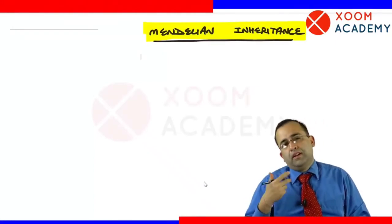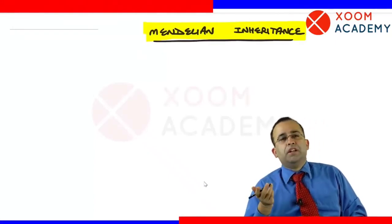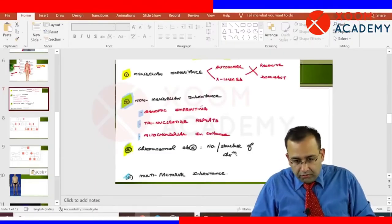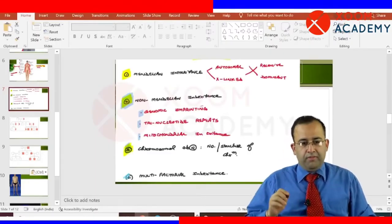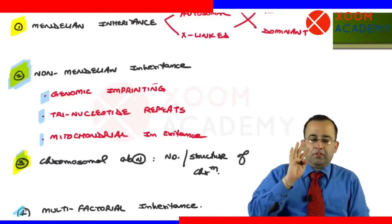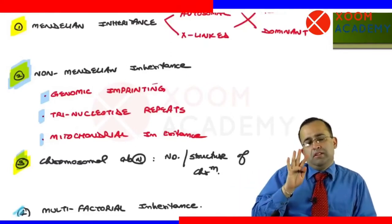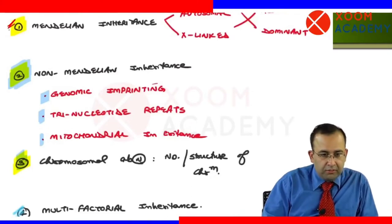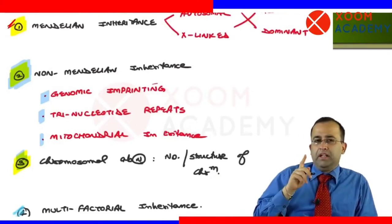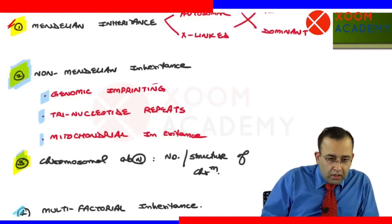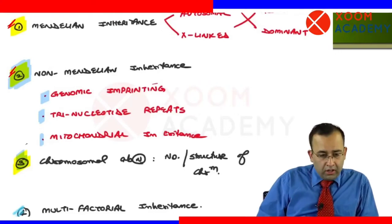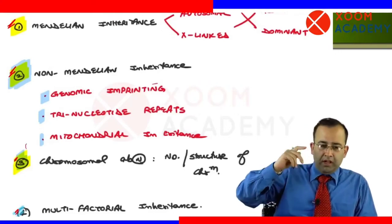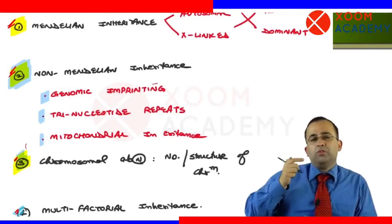This gets us to our last category of genetic diseases, that is Mendelian Inheritance. As a quick recap, we had divided genetic diseases into four categories: Mendelian Inheritance, Non-Mendelian Inheritance, Chromosomal Abnormalities, and Multifactorial. We are done with categories 2, 3, and 4.